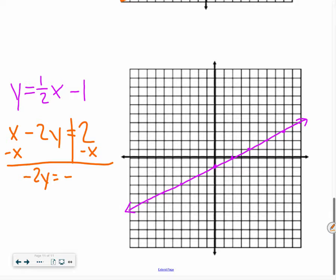So negative 2y equals negative x plus 2. What I'm going to do is I'm going to divide both sides by a negative 2 in order to get y by itself. So I have y equals what's negative divided by a negative, and that's positive, and x divided by 2, that's the same as 1 half x, because there's a 1 there, so it becomes a fraction. Then we have 2 divided by a negative 2, that becomes negative 1.